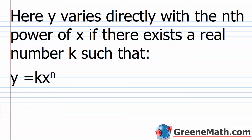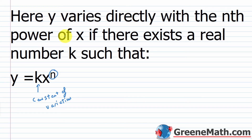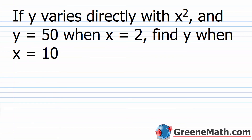Now that we've dealt with two basic scenarios, you're going to encounter something known as direct variation as a power. It's not more difficult — you follow the same process. You just have a power on your variable x. So y is equal to k times x raised to the nth power. We say y varies directly with the nth power of x if there exists a real number k such that y equals k times x to the nth power.